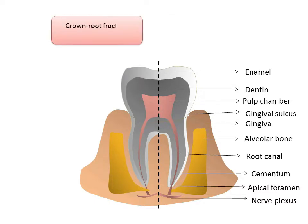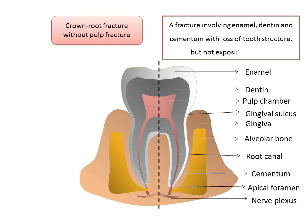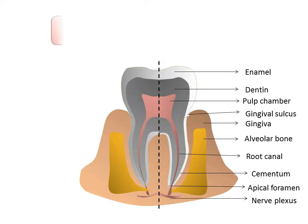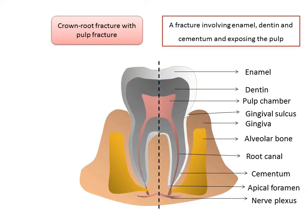Crown-root fracture without pulp exposure involves the enamel, dentine, and cementum. There is loss of tooth structure but the pulp is not yet exposed. It is mostly a diagonal fracture wherein the crown fracture extends below the gingival margin. Crown-root fracture with pulp exposure is a fracture involving enamel, dentine, and cementum that also exposes the pulp — a diagonal fracture with pulp exposure.